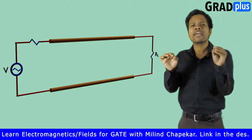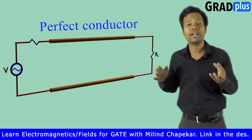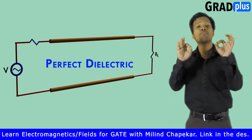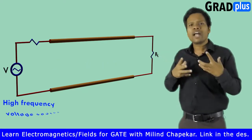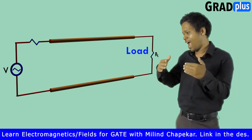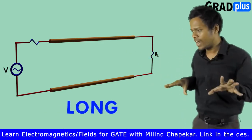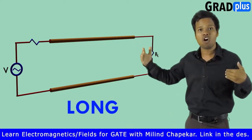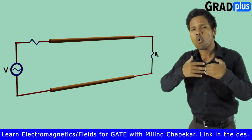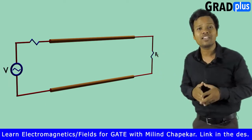Consider this simple two-wire transmission line as you can see on the screen. Assume that the wires are made up of perfect conductor and the medium between these two conductors is a perfect dielectric. Assume that you have applied a high frequency voltage source at the source end of the transmission line, and it is delivering power to the load connected at the load end. Transmission lines can be very long — used to deliver high frequency power over very large distances, even in kilometers.